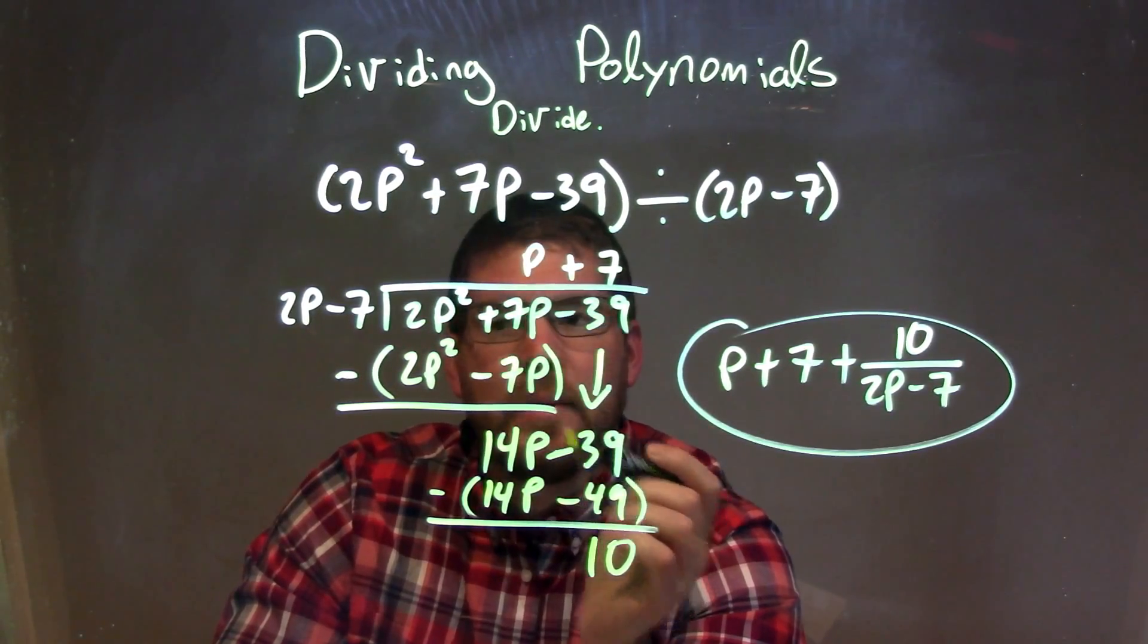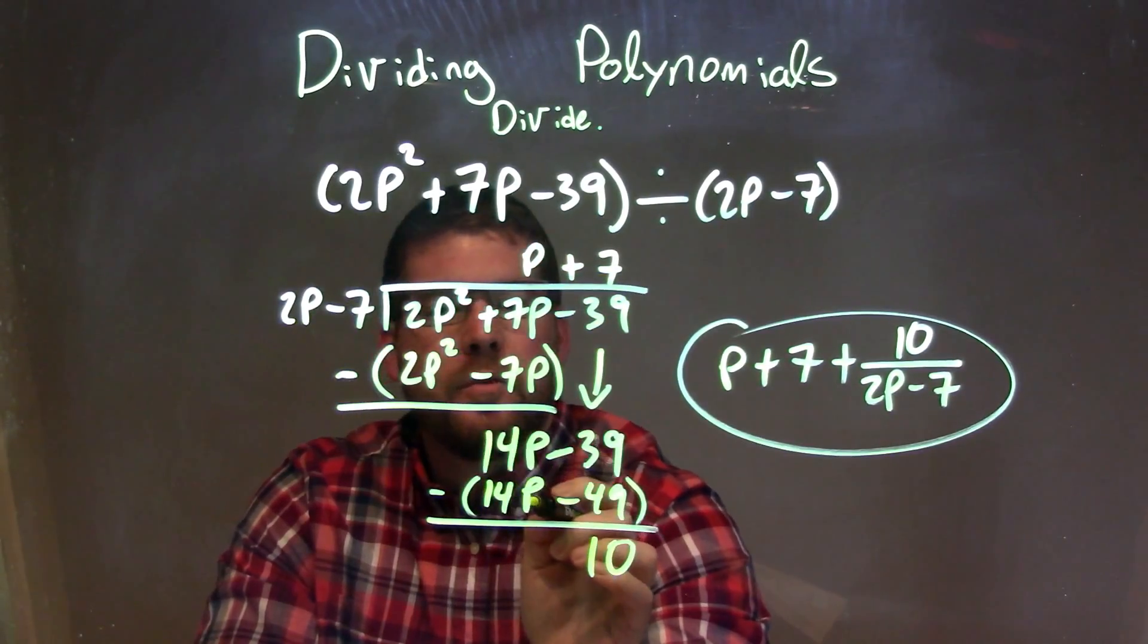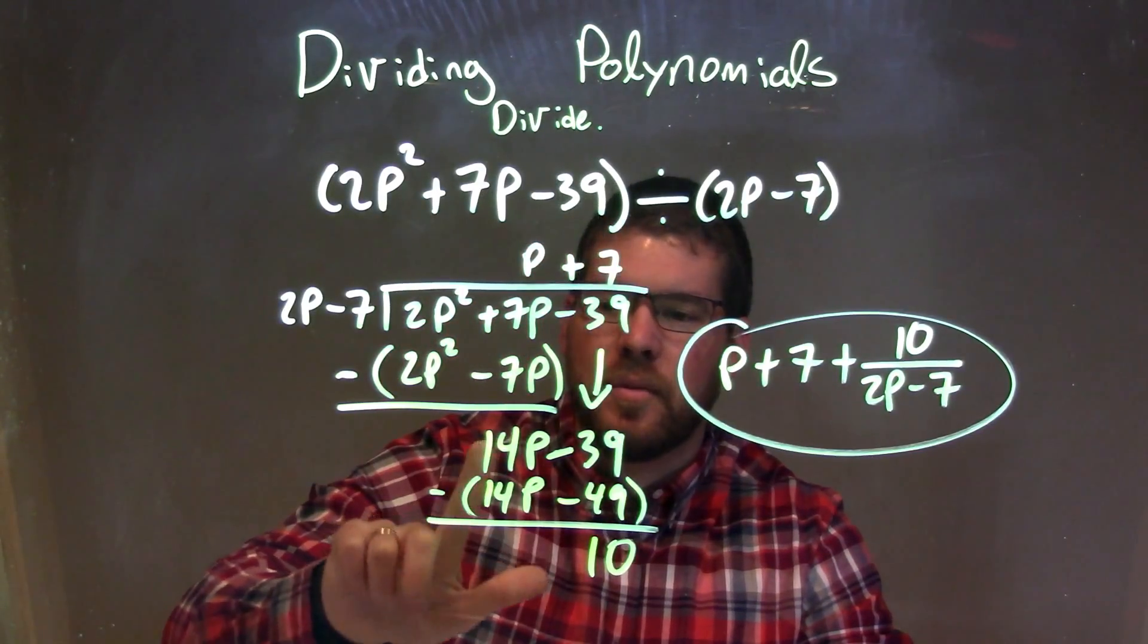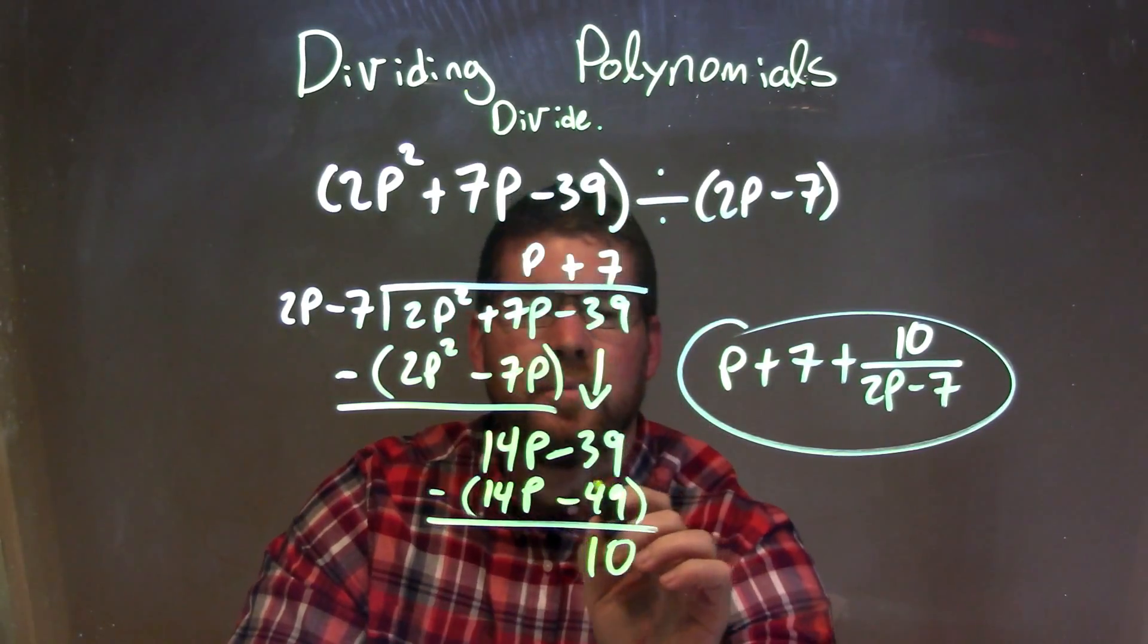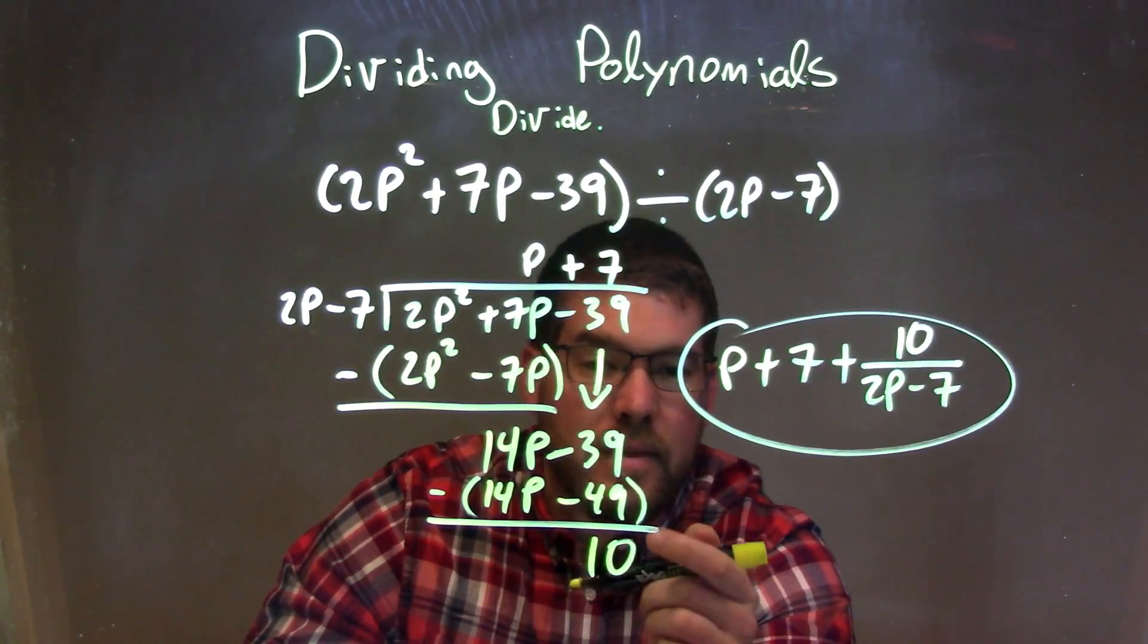The same thing. What times 2p gives me 14p? Also 7. So 7 times 2p is 14p here. And 7 times minus 7 is minus 49. We subtracted the two. Make sure we put parentheses, subtracted all parts. Made that like plus a positive right there at the 49. And it ended up with a positive 10. That's my remainder.